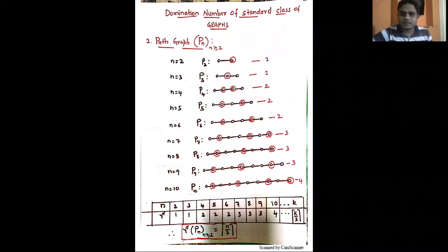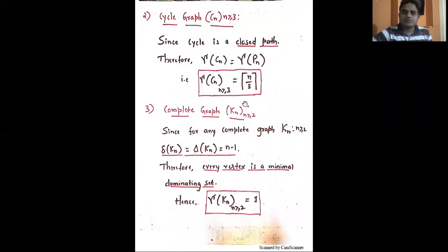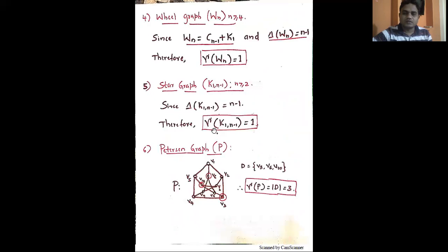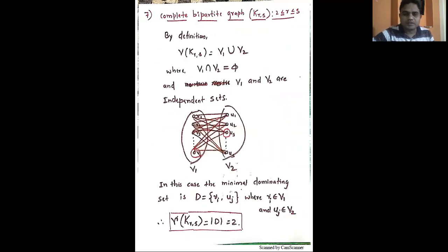The graphs we will cover are: path graph, wheel graph, cycle graph, complete graph, star graph, Petersen graph, and complete bipartite graph.